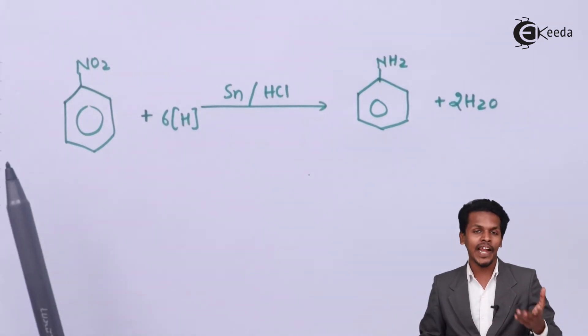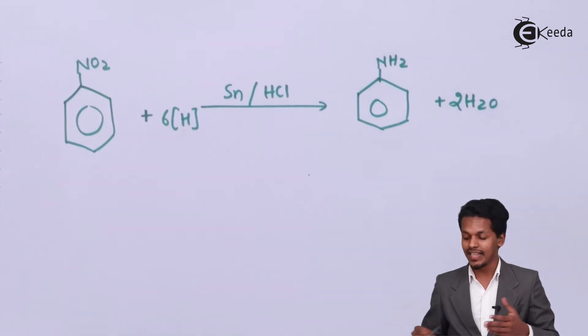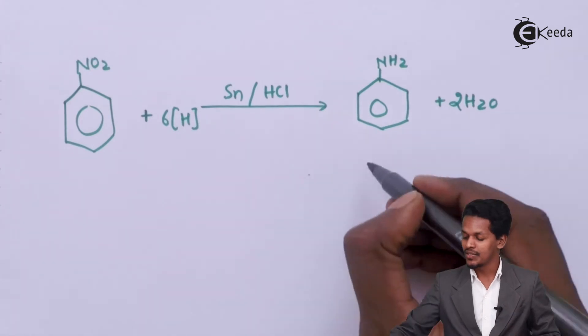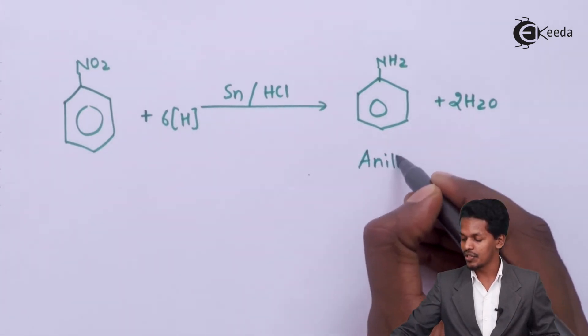So this is how we can convert a nitroalkane or we can convert nitrobenzene to aniline, which is nothing but aromatic amine. So this is nothing but aniline that I am mentioning over here.